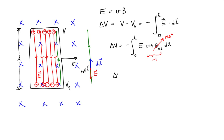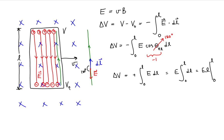The cosine of 180 degrees is equal to minus one. So the potential difference is equal to minus times minus one — which is a positive — times the integral from zero to L of the magnitude of the electric field dL. Since the electric field is uniform, we can pull it outside of the integral, giving us E·L evaluated from zero to L. Therefore, the potential difference is equal to the product of the electric field and the length of the conductor.